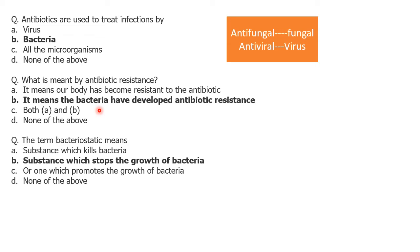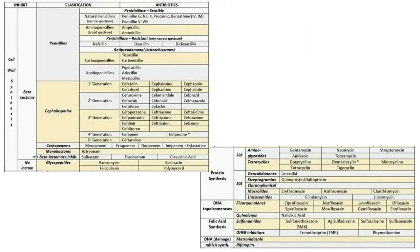The term bacteriostatic means the substance which stops the growth of bacteria. There is another term, bactericidal, which refers to a substance that kills the bacterial cell. So bactericidal kills the bacterial cell, while bacteriostatic just stops the growth of bacteria.